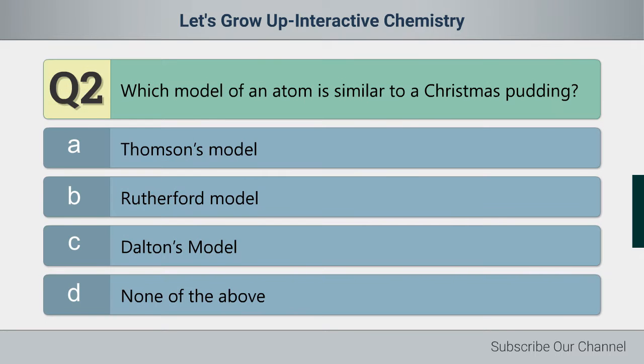Question number two. Which model of an atom is similar to a Christmas pudding? Option A: Thomson's model. B: Rutherford model. C: Dalton's model. D: None of the above.